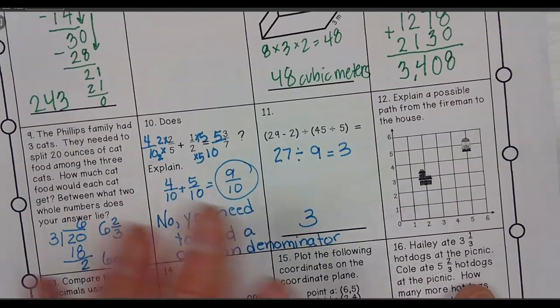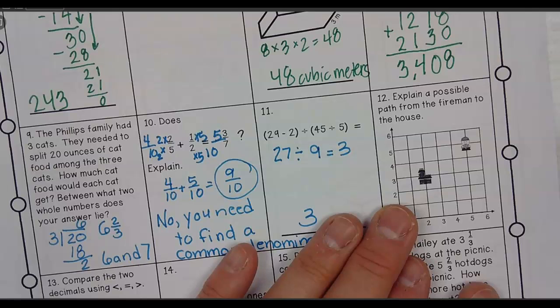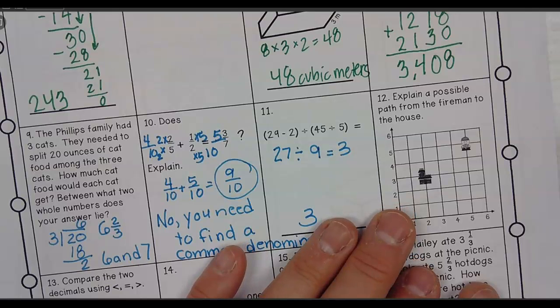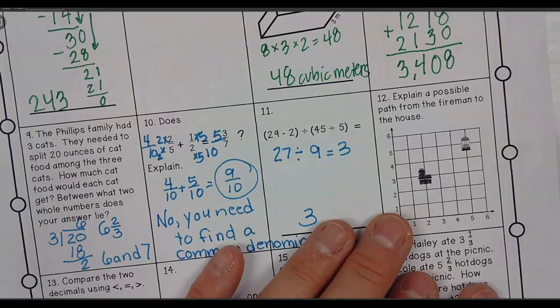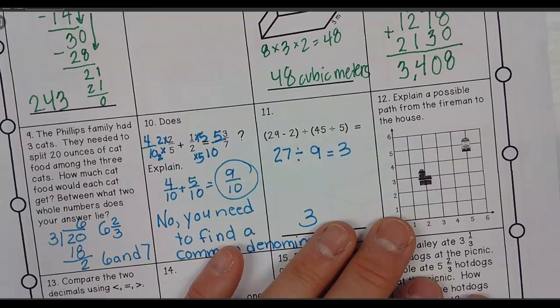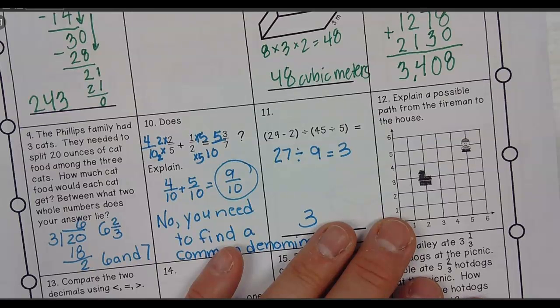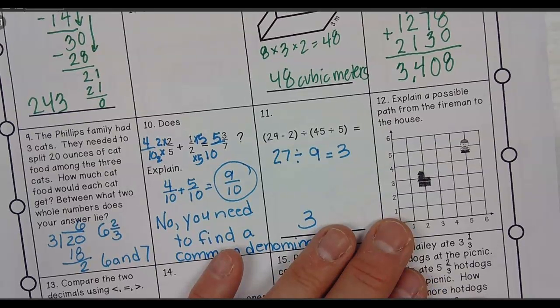All right. Explain a possible path from the fireman to the house. Now, I'm going to be honest with you. I did not do a very good job explaining this. So if I'm the fireman, how am I going to get to the house? I just need one path. What's one path I could take to get to the house?